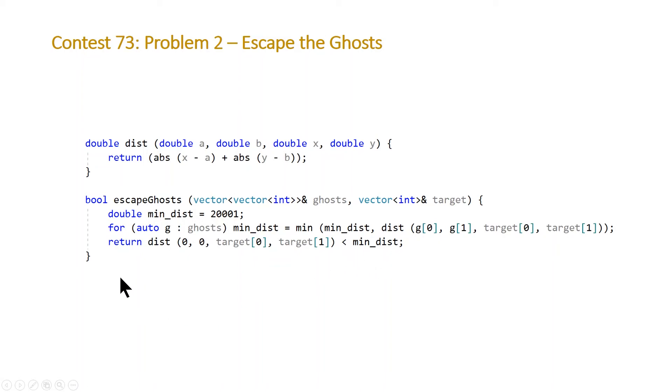And if that's true, we know he can escape. And if it's not true, we know Pac-Man can't escape. So this algorithm will definitely be linear because we only have one loop and linear in the number of ghosts that we have.